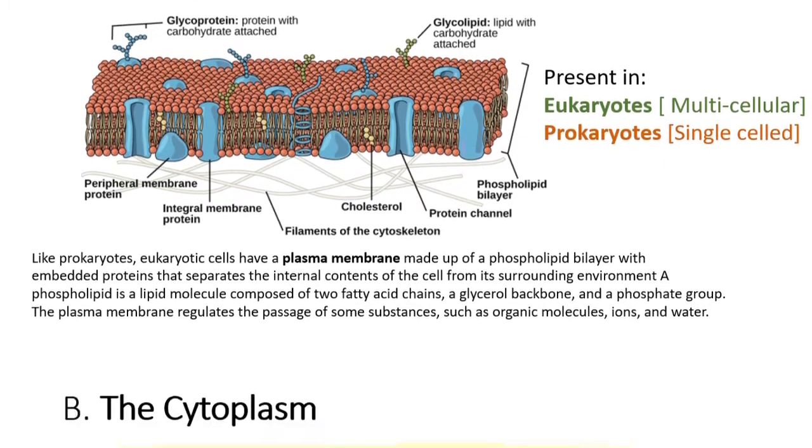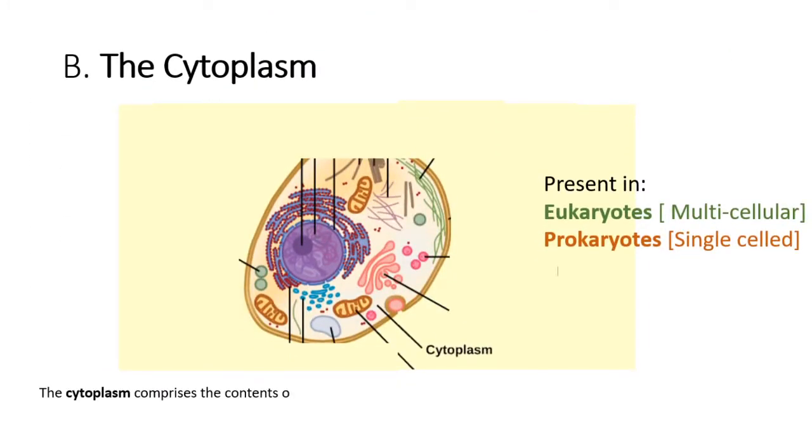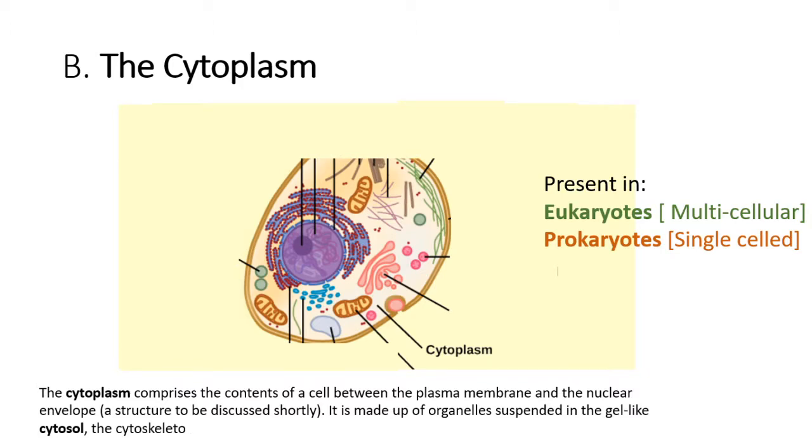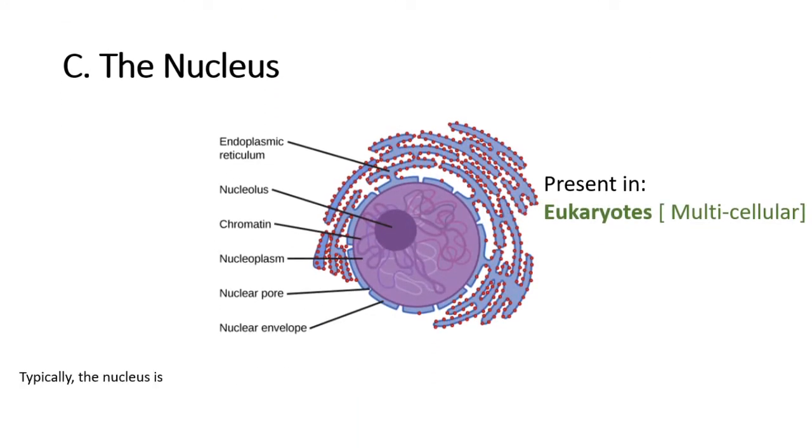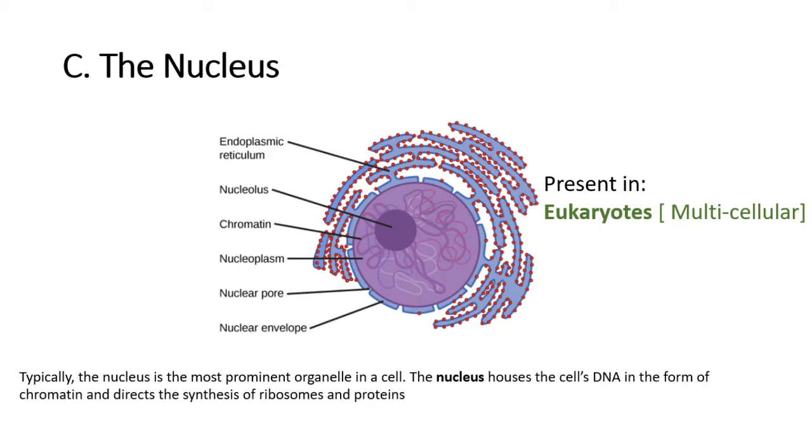The cytoplasm comprises the contents of the cell between the plasma membrane and the nuclear envelope. It is made up of organelles suspended in the gel-like cytosol, the cytoskeleton, and various chemicals. Typically, the nucleus is the most prominent organelle in a cell. The nucleus houses the cell's DNA in the form of chromatin and directs the synthesis of ribosomes and proteins. The outermost boundary of the nucleus is the nuclear envelope.